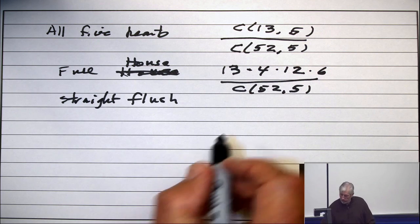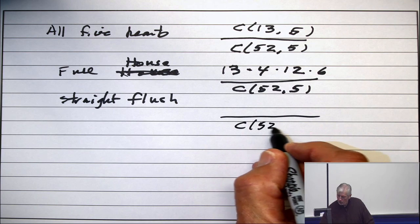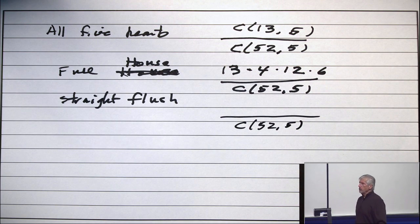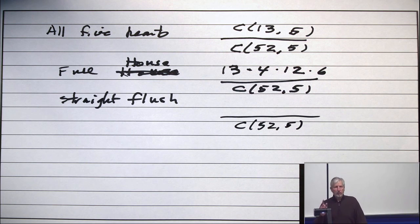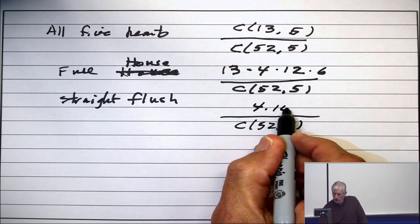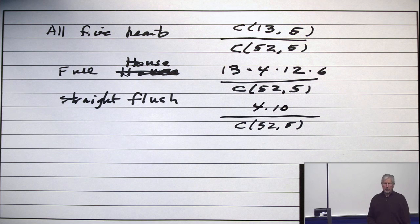Okay. So the denominator is once again, C(52, 5). And the numerator is choose the kind, 10. Choose the suit, 4. So the numerator is just 4 times 10. Not very likely, in other words. Okay.